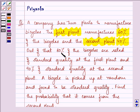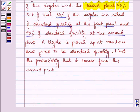Out of that, 80% of the bicycles are rated of standard quality at the first plant and 90% of standard quality at the second plant. A bicycle is picked up at random and found to be standard quality. Find the probability that it comes from the second plant.